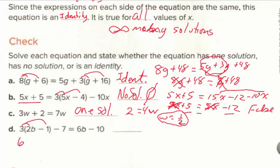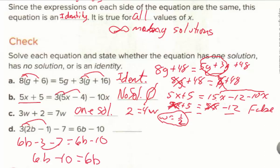For part D, distributing gives 6b − 3 minus 7, which simplifies to 6b − 10 on the left, equal to 6b − 10 on the right. That's the reflexive property. Subtracting 6b from both sides leaves −10 = −10, a true statement — so this is another identity. No matter what value we substitute for b, the left and right sides will always be equal, meaning infinitely many solutions.